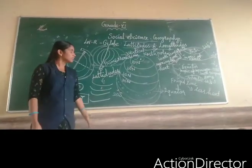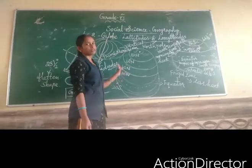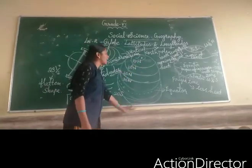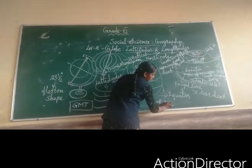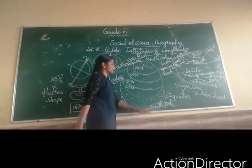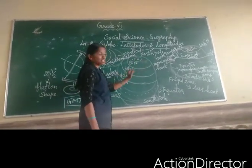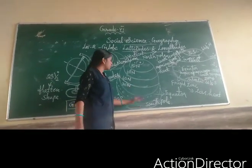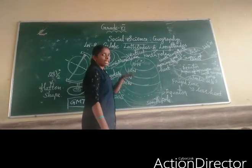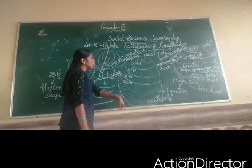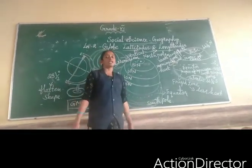Let us understand the concept of this lesson. For a globe, we will separate it as north pole and south pole. If we separate everything from the center, we have to draw an equator. Then north pole: 80 degrees, 60 degrees, 40 degrees, 20 degrees north. Same for the south side — 20 degrees south, 40 degrees south, 60 degrees south, then 80 degrees south. Thank you, children.